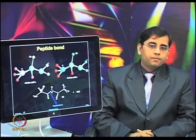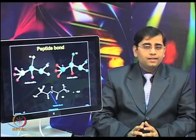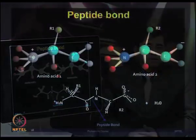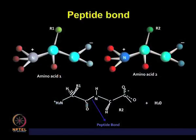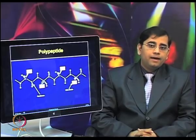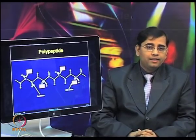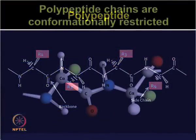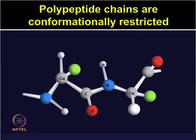Let us now talk about peptide bonds. A peptide bond links amino acids to form polypeptide proteins. The alpha carboxyl group of one amino acid is linked to the alpha amino group of another amino acid. These two amino acids form the bond, and the peptide bond is formed with the accompanying loss of a water molecule. When many amino acids are linked together they form a polypeptide. The polypeptide chains are conformationally restricted — the peptide bond is planar, and all six atoms (alpha carbon, carbon, oxygen, nitrogen, hydrogen, and another alpha carbon) lie in the same plane.